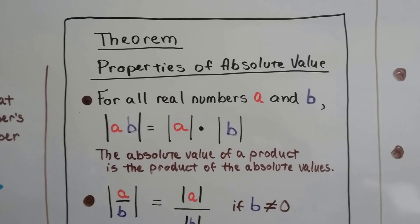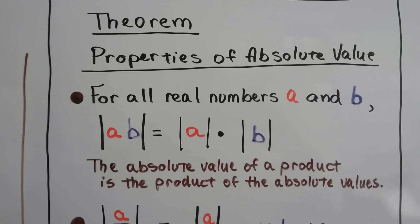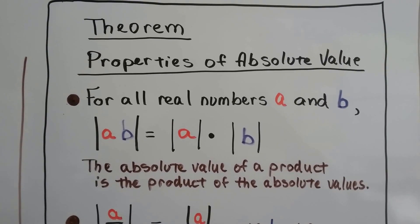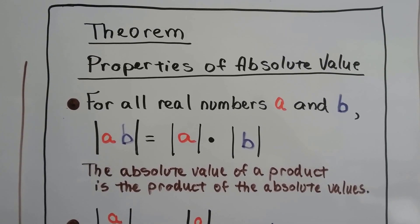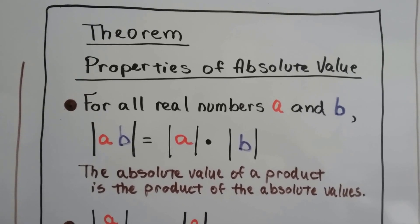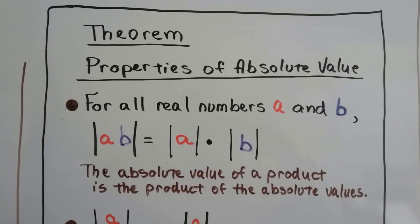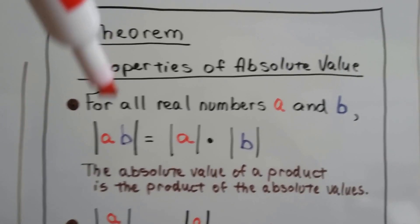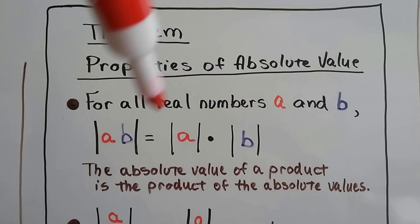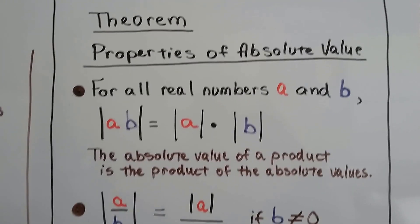So I've got a few theorems for you — the properties of absolute value. The first one says: for all real numbers a and b, the absolute value of a times b equals the absolute value of a times the absolute value of b. The absolute value of a product is the product of the two absolute values.